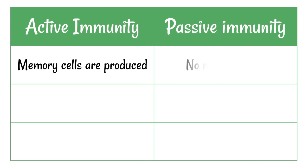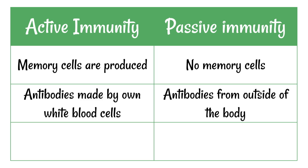Let's look at a few comparisons. Memory cells are produced in active immunity, but not in passive immunity. And antibodies come from inside of the body produced by the body's own white blood cells in active immunity. But with passive immunity, they come from outside.